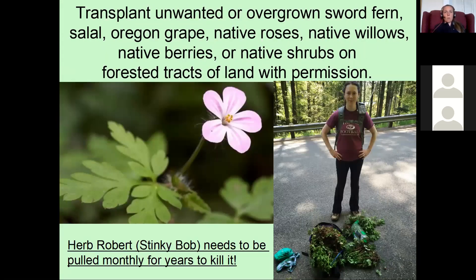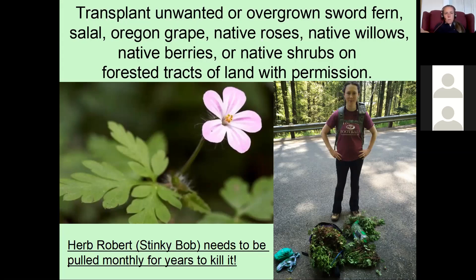To replace invasive species you remove, transplant unwanted or overgrown sword ferns, salal, Oregon grape, native roses, native willows, native berries, or native shrubs from forested tracks of land — with permission. After removing something like herb robert, the easiest replacement is to find someone with land who's happy for you to dig a few sword ferns. Building those relationships is key: I give mason bees, they give sword ferns — you work together.